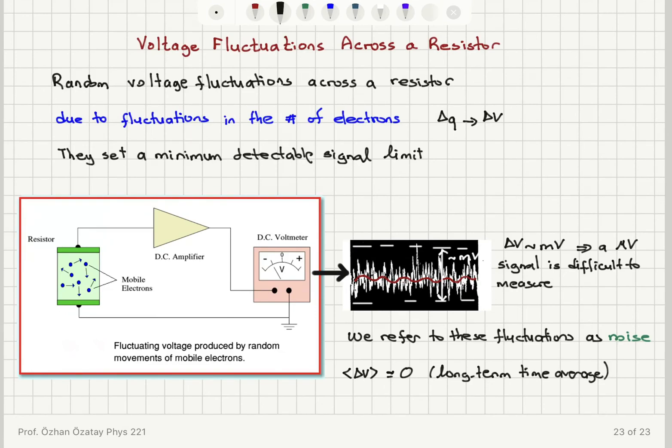So we do a long-term time average. For example, if we are trying to measure a DC signal of the order of microvolts, by doing this long-term time averaging, we get rid of the noise.